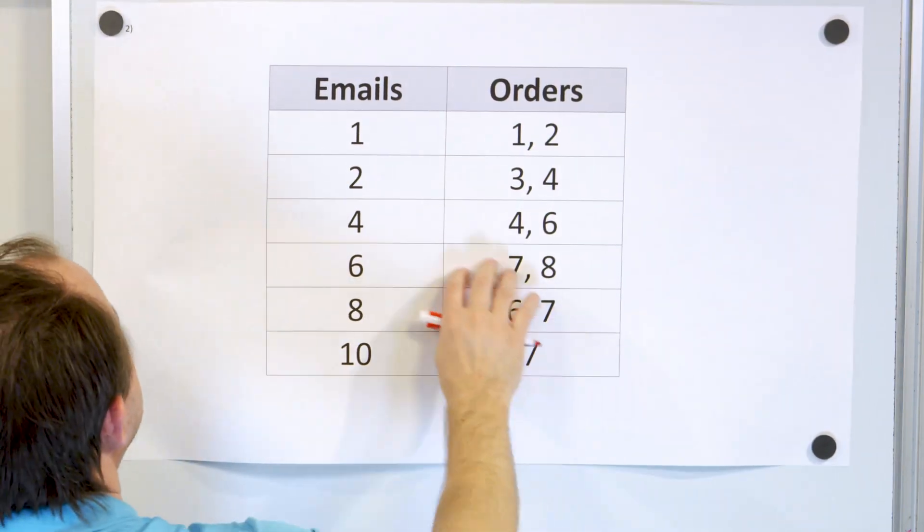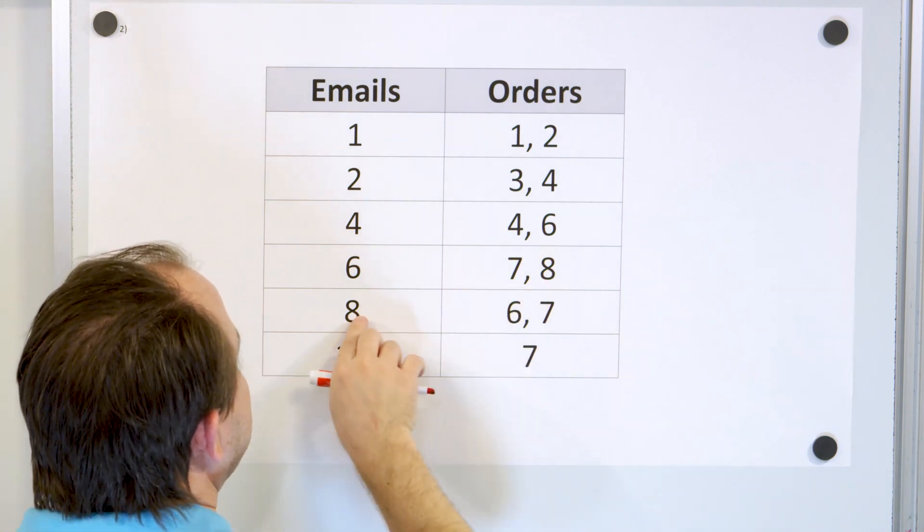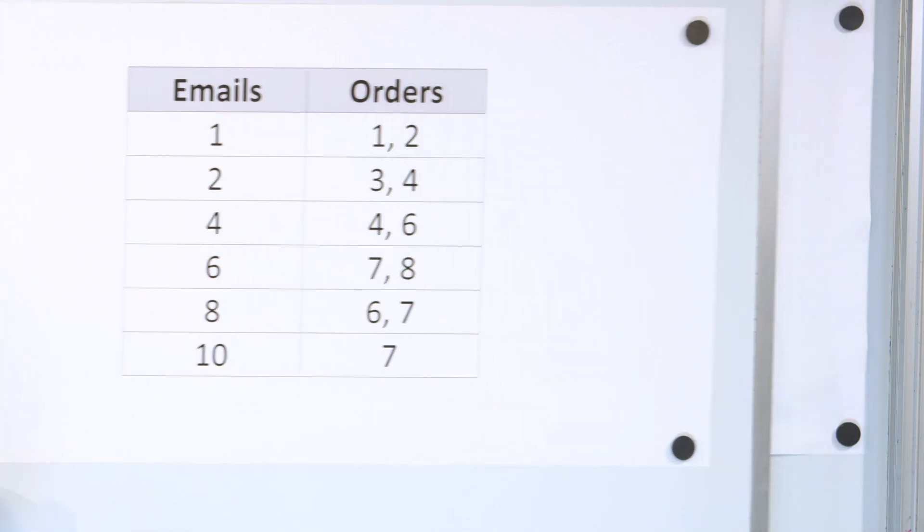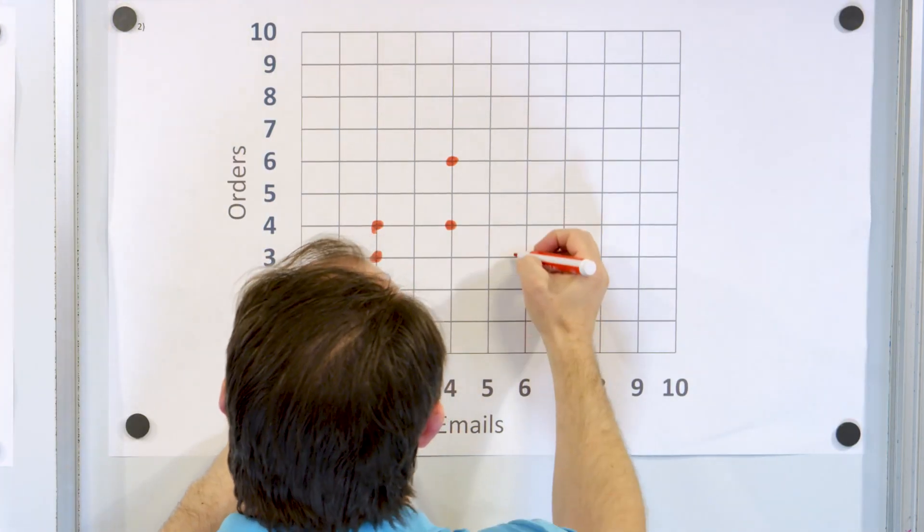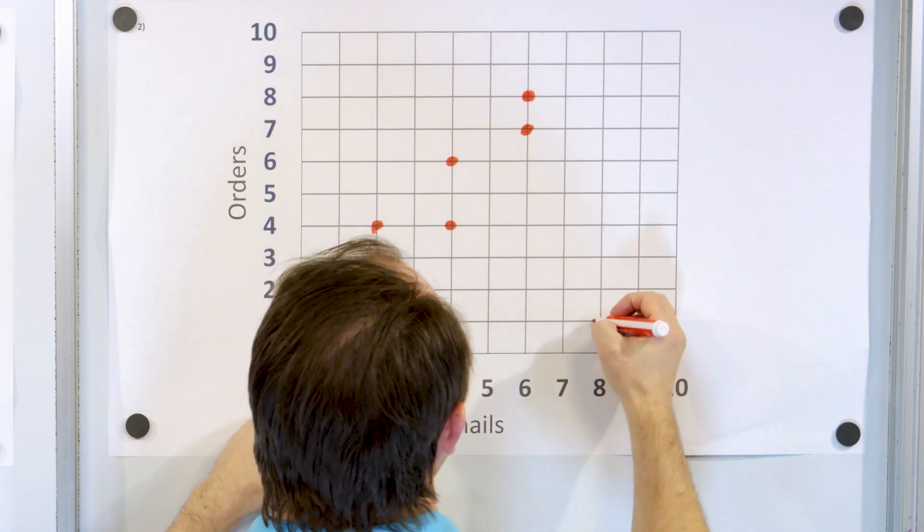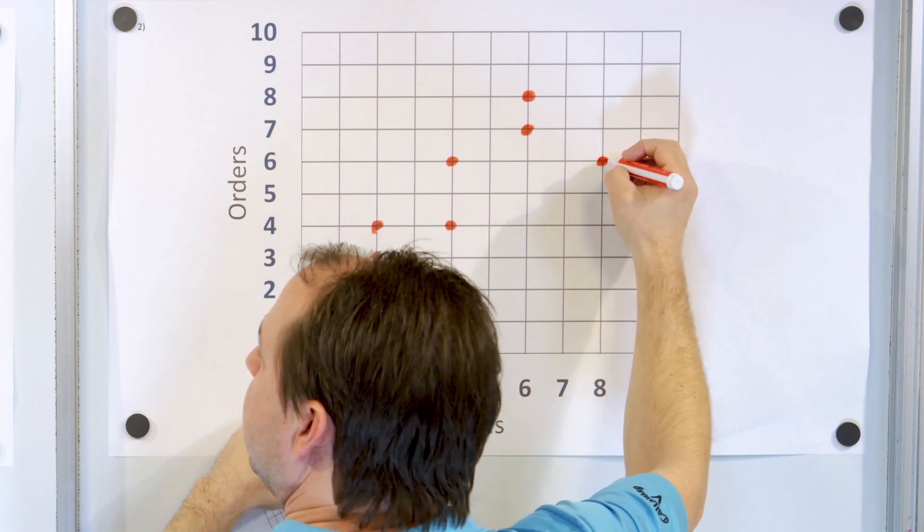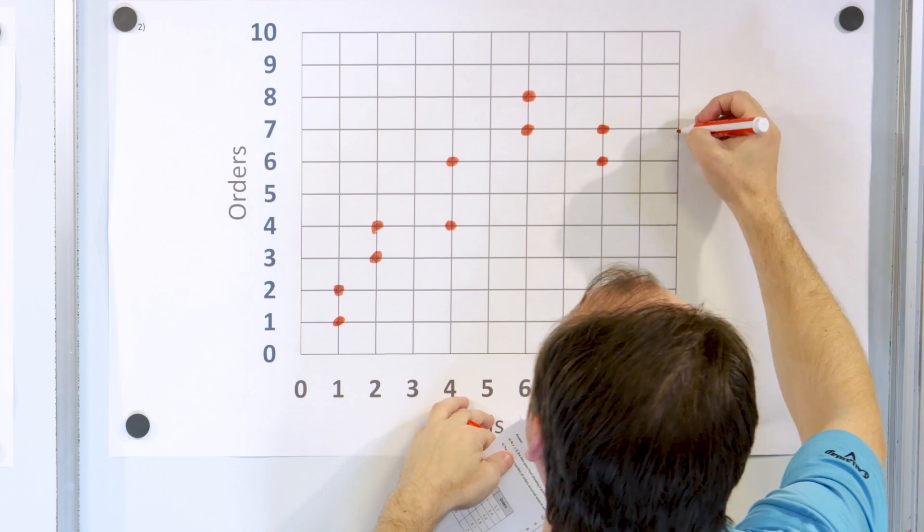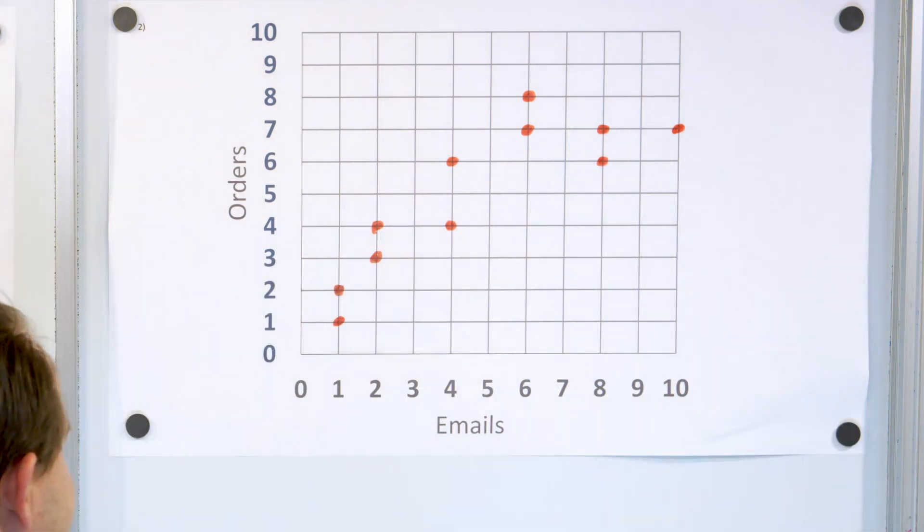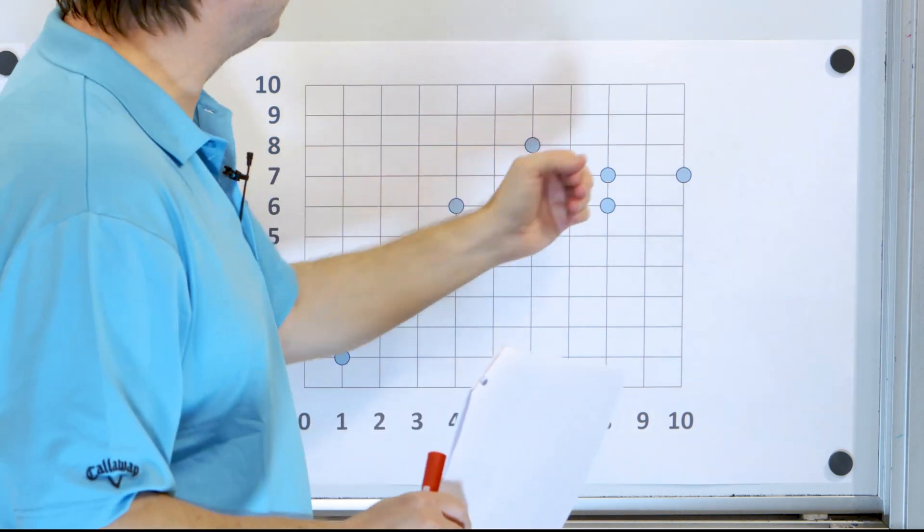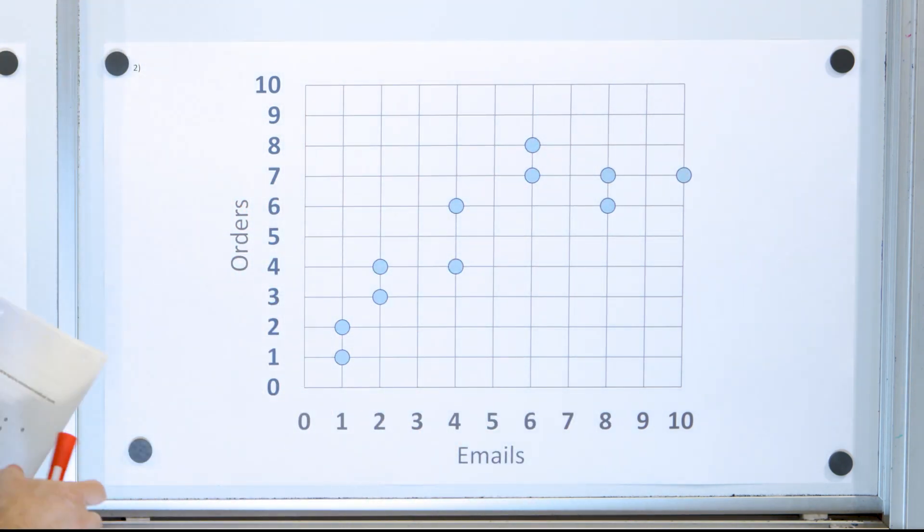Next we have six comma seven and six comma eight and eight comma six and eight comma seven and ten comma seven. So we're just plotting these last five points. Six comma seven is up here and six comma eight is right there. Eight comma six is right here, eight comma seven is right here, and ten comma seven is right here. So this is the scatter plot that we have. It's perfectly fine to work with this, but I've drawn a prettier version down here so we can more accurately look at it.